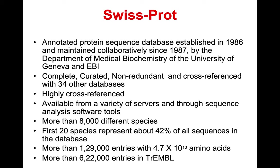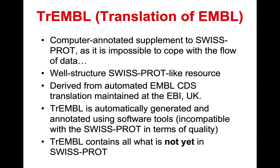More than 8,000 different species have been reported and uploaded in SwissProt. The first 20 species represent about 40 percent of all sequences in the database. There are more than 1 million entries with 4.7 × 10^10 amino acids, and more than 6 million entries in TrEMBL, which means TrEMBL also gets some of its information from SwissProt.